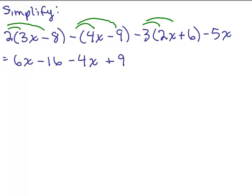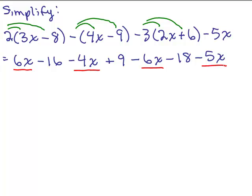Now we're going to do the negative 3 times each term in this parenthesis. So we have a minus 6x. And then we have a negative 3 times 6, that will be a negative 18. And then I have this minus 5x hanging out on the end. So now we need to combine the like terms. There are the x terms — I'm going to underline them so it's easy to see. Do you notice how I have a 6x and a minus 6x? Basically, that's going to be 0. So we've got the negative 4x and a negative 5x together, which adds up to a negative 9x.